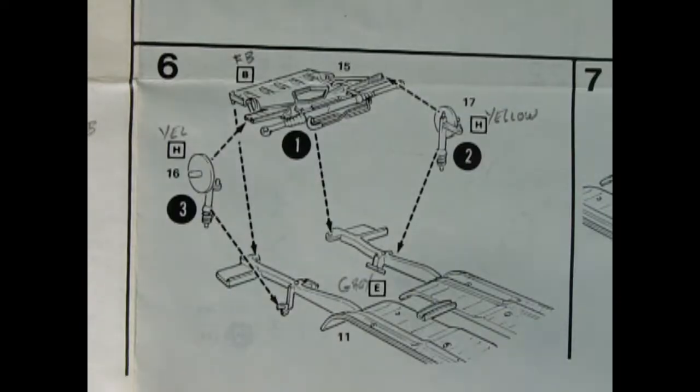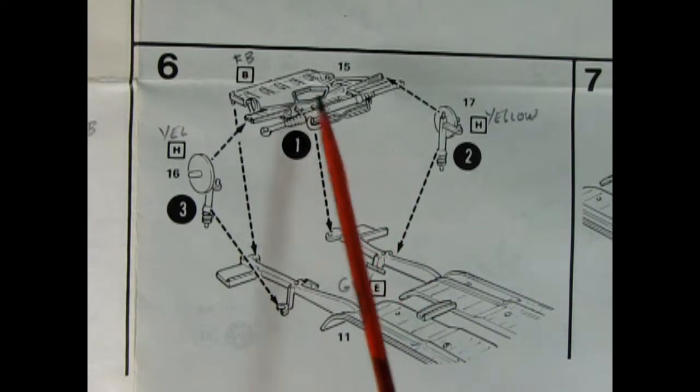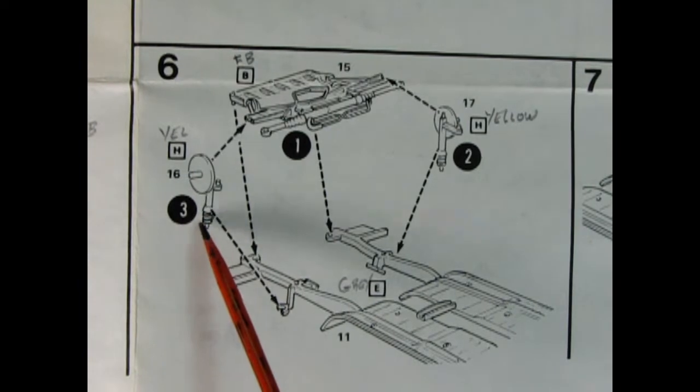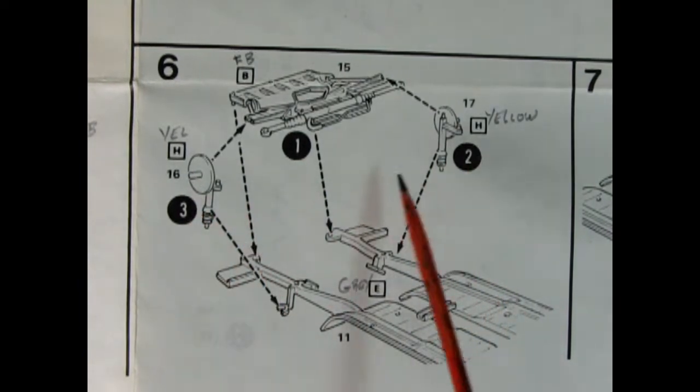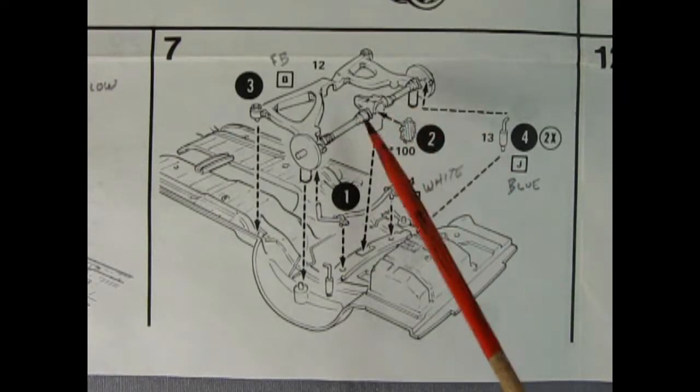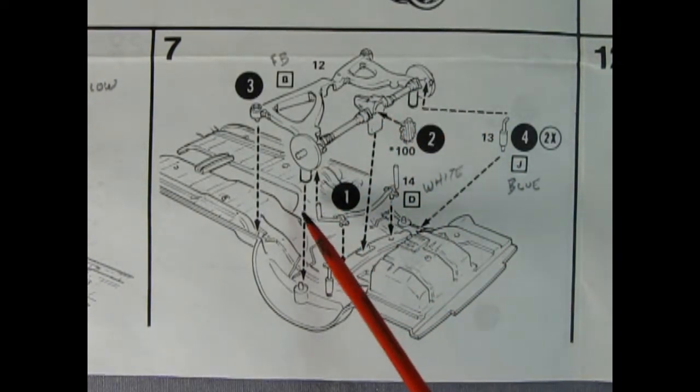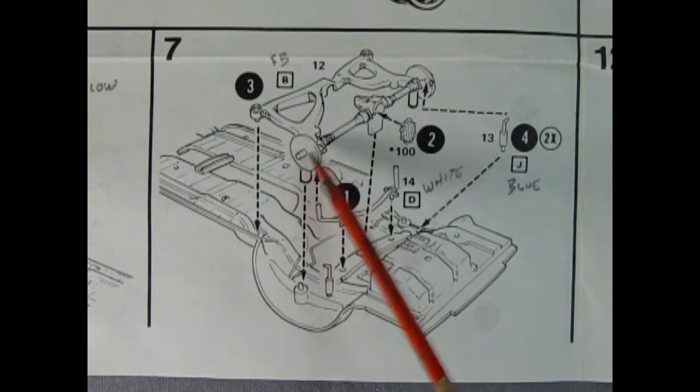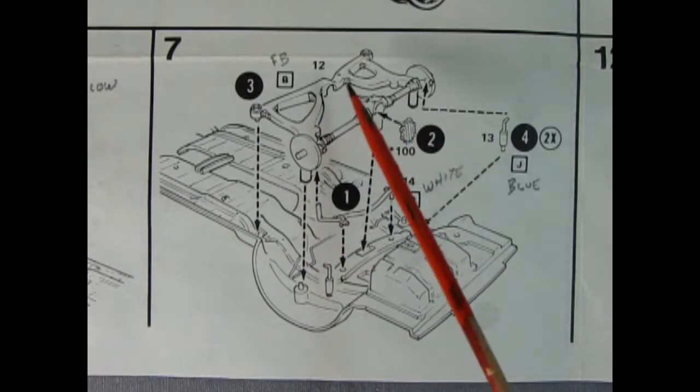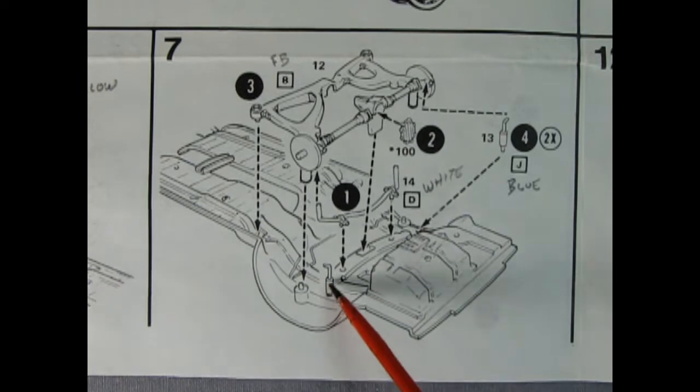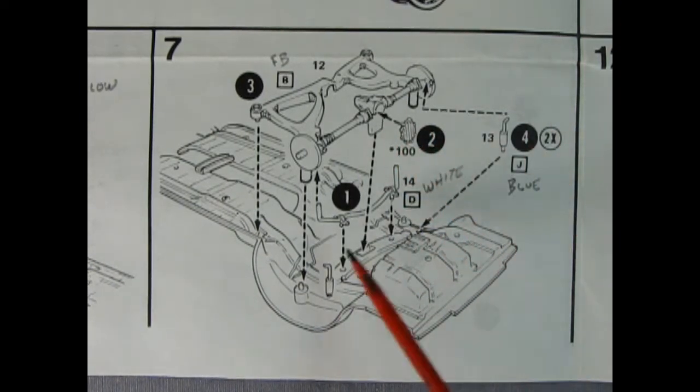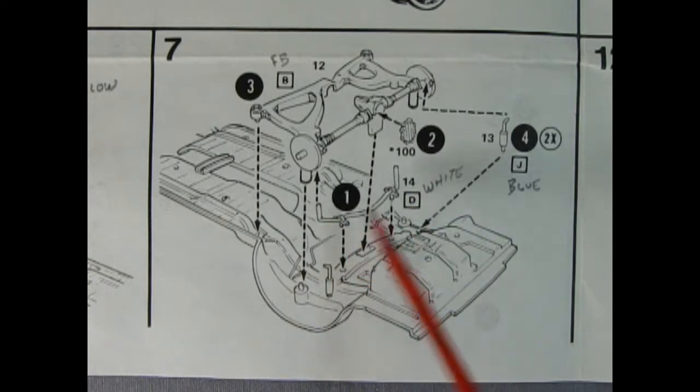Now here we get into panel six, which shows the front suspension being dropped down onto our frame, and then we have the McPherson strut type front end all gluing into place. Panel seven shows our rear independent suspension being all glued together. Unfortunately, it's not independent in this model - it's one piece, but still that makes it easy. You drop it down and then you put on your shock absorbers and the differential cover, and then you got that nice cross brace right in there as well.